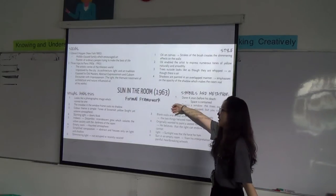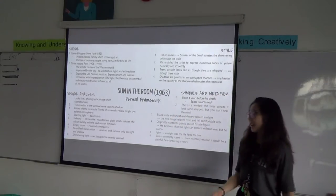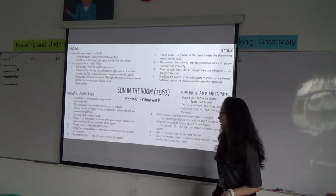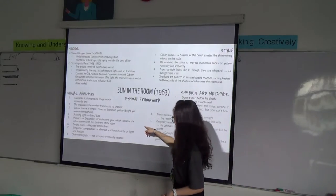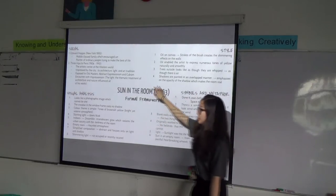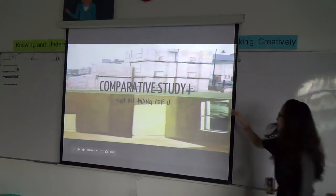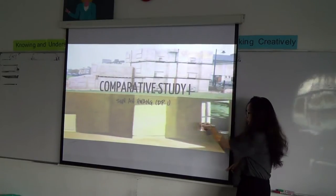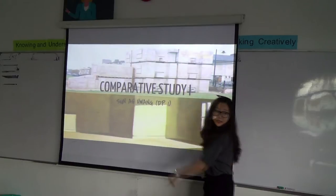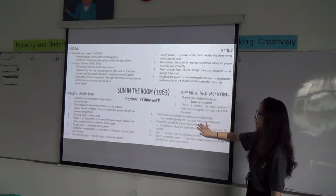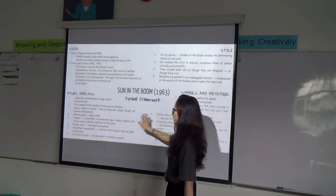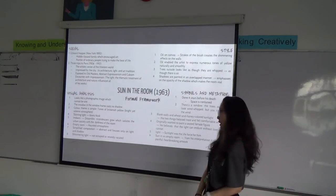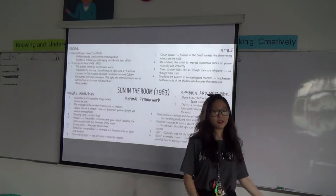The visual analysis: 'Sun in the Room' looks like a photograph, but it is not. It has a little sense of surrealism because if you look at the picture, there is no cast shadow of the central windowpane — I'll explain that in the symbols and metaphor section. The color theme is very simple — tones of yellow, but it looks a bit more brownish, which I described as a brownish glow. It creates a bright and very solemn atmosphere.